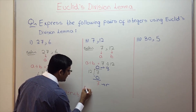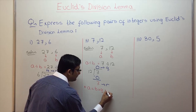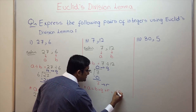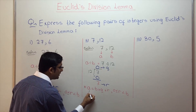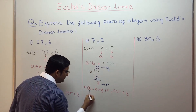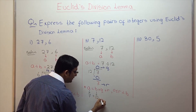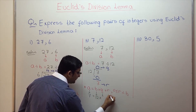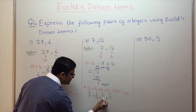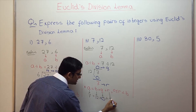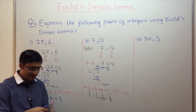State Euclid's division lemma: A is equal to B into Q plus R, where R is greater than or equal to 0 and less than B. Now plug in the values. A is 7, B is 12, Q is 0, R is 7. So we have 7 is equal to 12 into 0 plus 7. As simple as that.